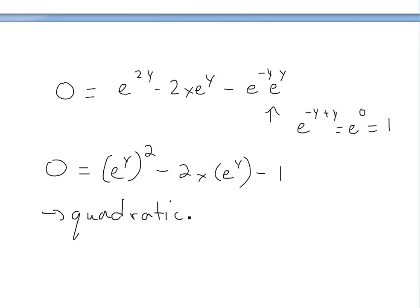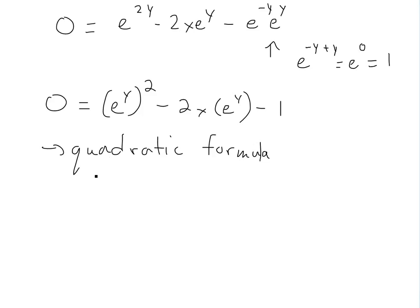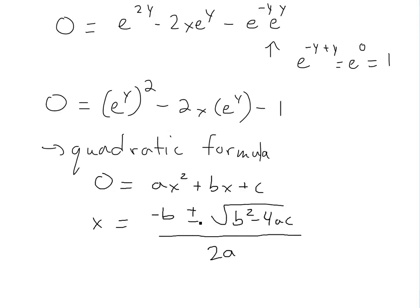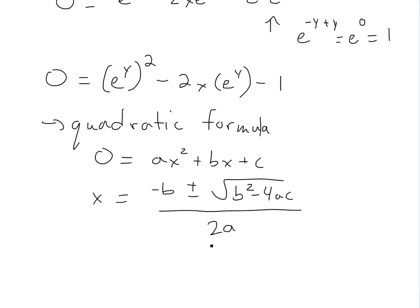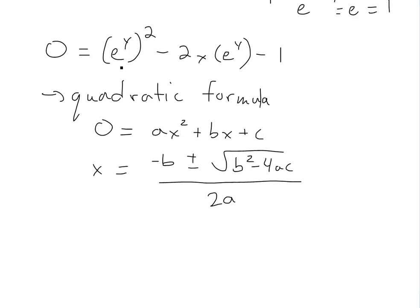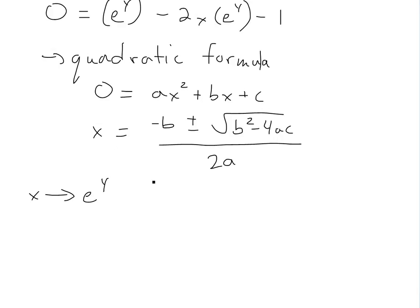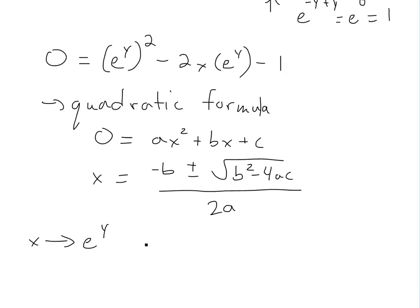This is a quadratic equation in e^y. Using the quadratic formula — if 0 = au² + bu + c, then u = (−b ± √(b² − 4ac)) / 2a — we identify a = 1, b = −2x, and c = −1. You can find a proof of the quadratic formula in the linked video below.